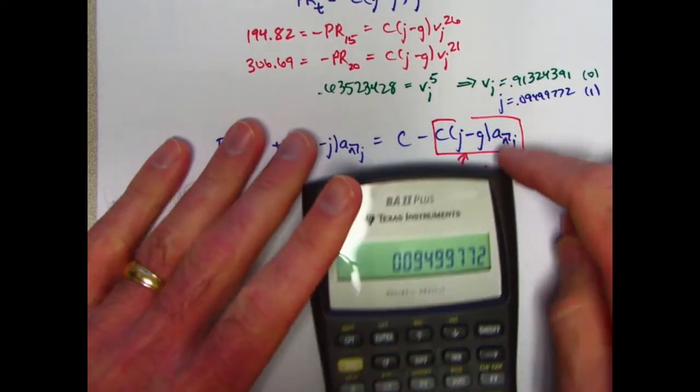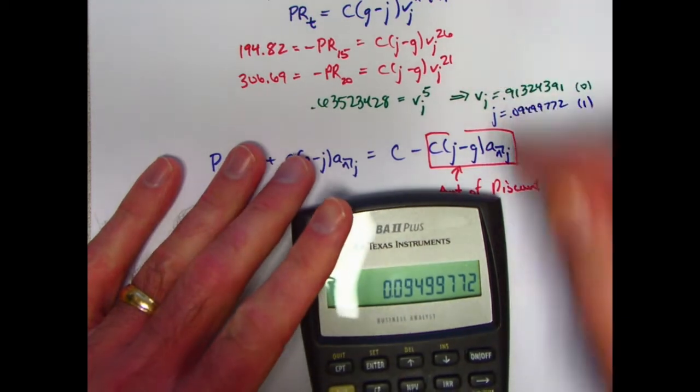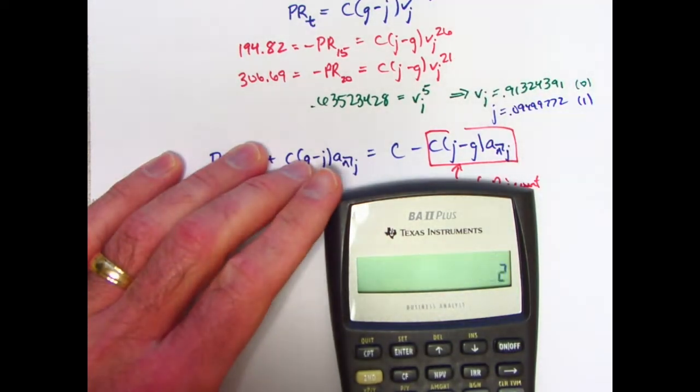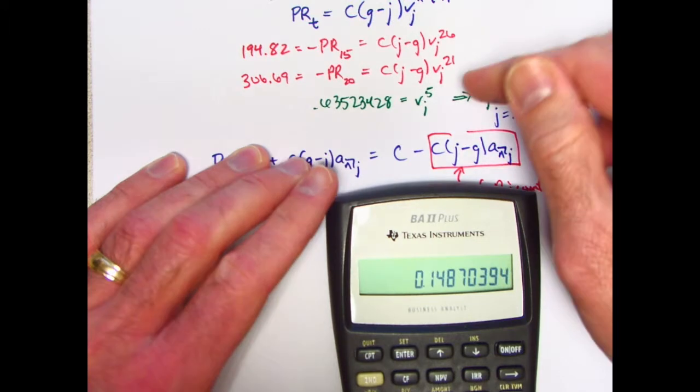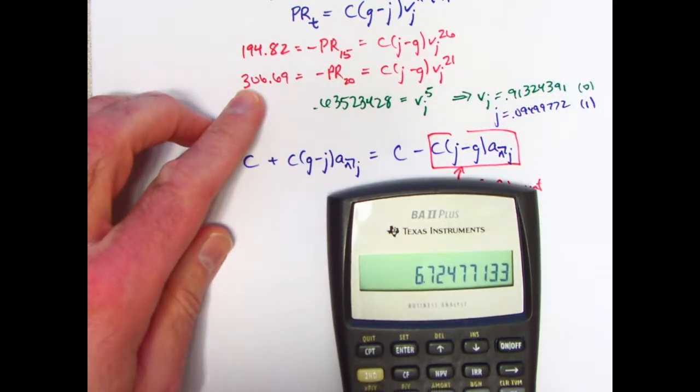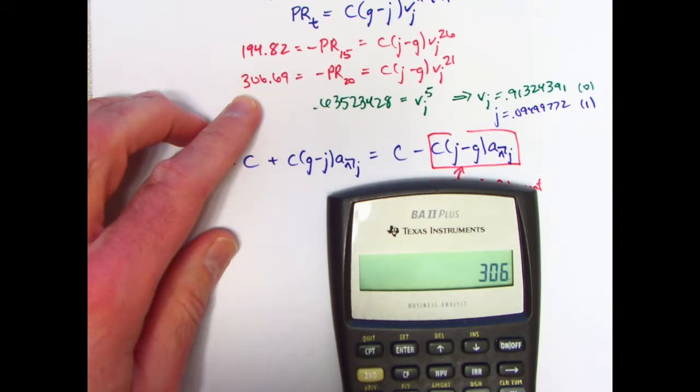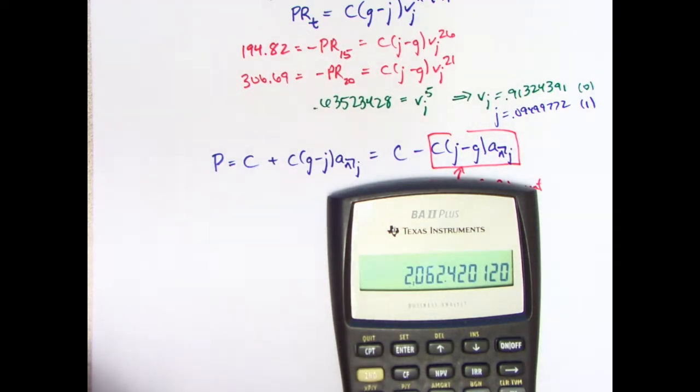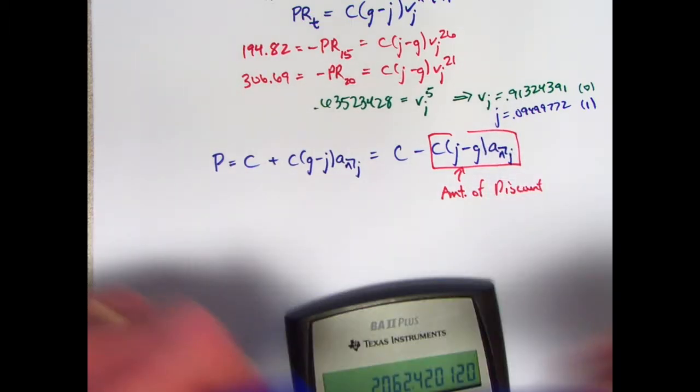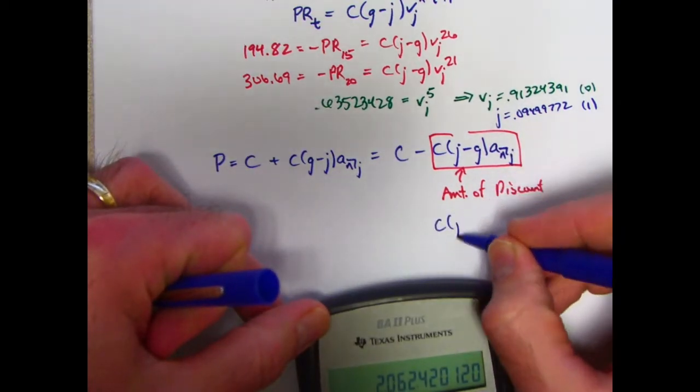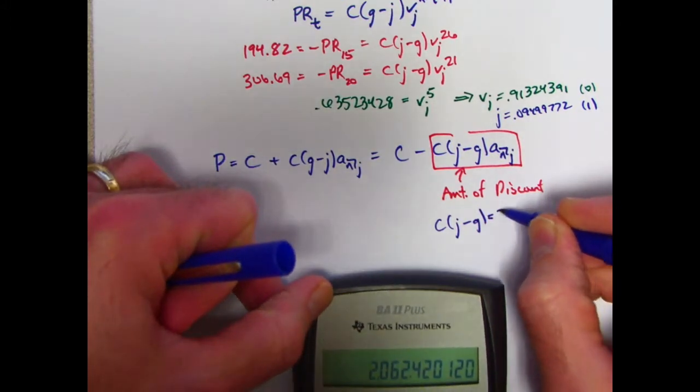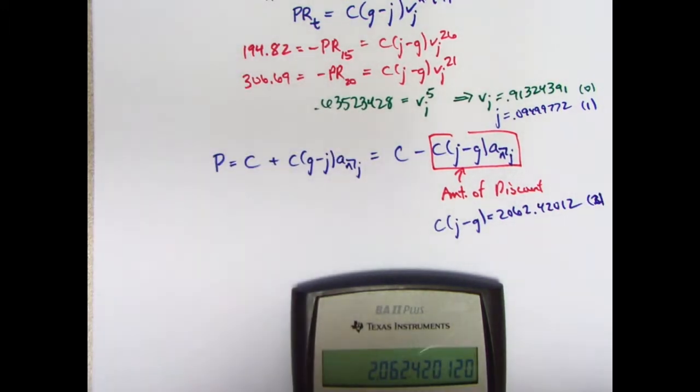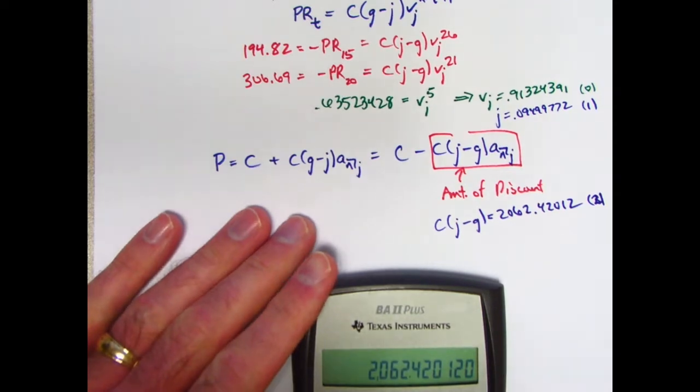Alright, we're getting close to being done. Let's go to this equation and say, take v, which is in register 0, raise it to the 21st power. Take that. Divide both sides by that, so take the reciprocal of that, and multiply it times 306.69. Looks like C times j minus g is a pretty big number, 2062.42. I will write that down just for the sake of having that on paper here. C times j minus g is 2062.42012. I'll store that in register 2, although I really don't need to, I think. But anyway, yeah, I don't need to, but I did it anyway.